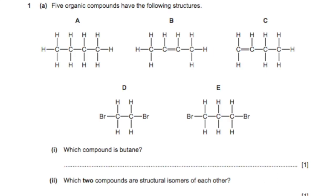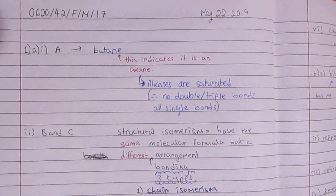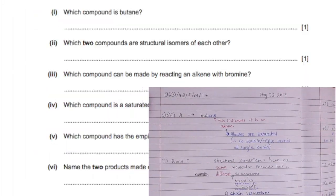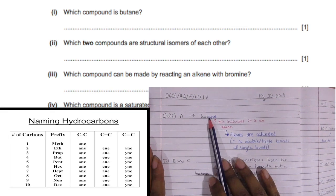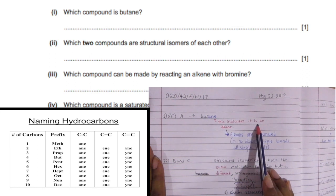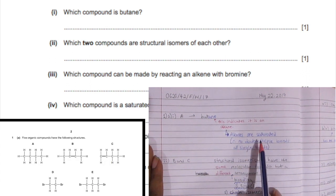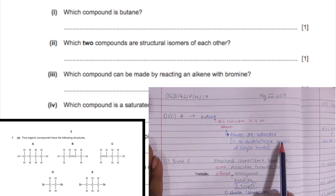The first question asks us to find butane. Butane is an alkane due to the ending 'ane,' and alkanes are saturated, meaning they only have single bonds. The prefix 'but' indicates there are four carbons: meth, eth, prop, but, and so on.